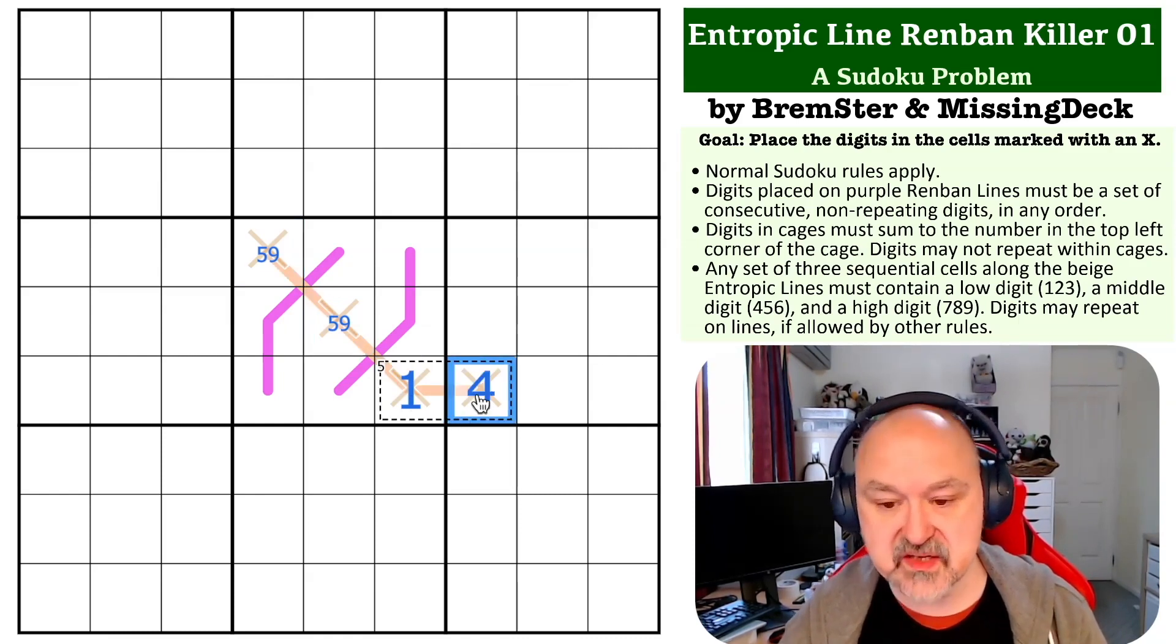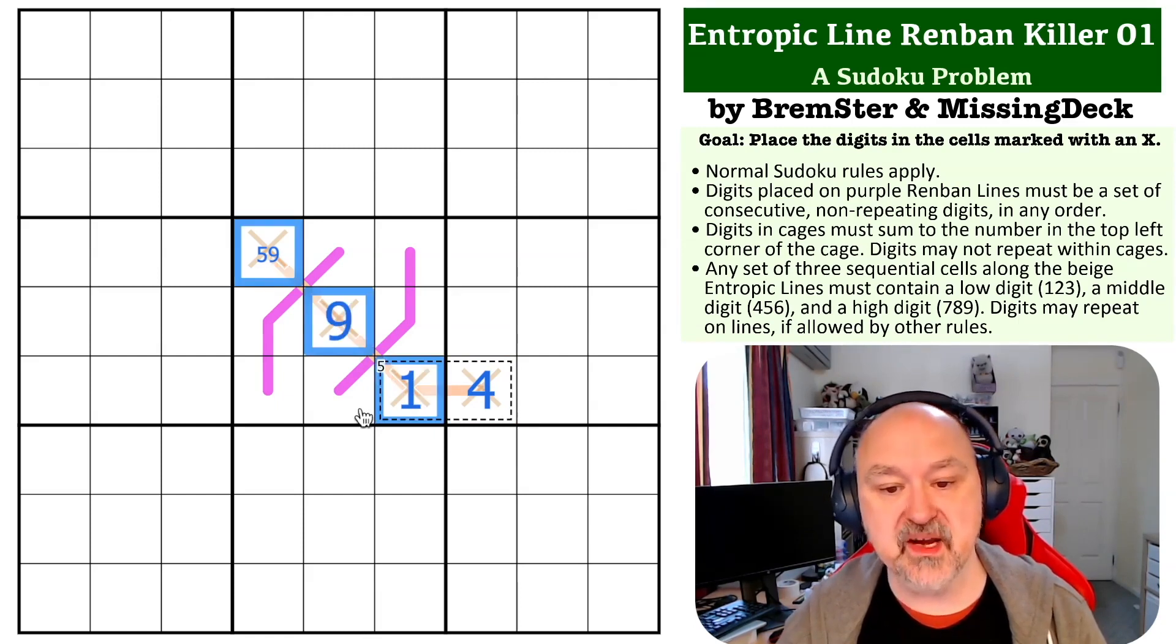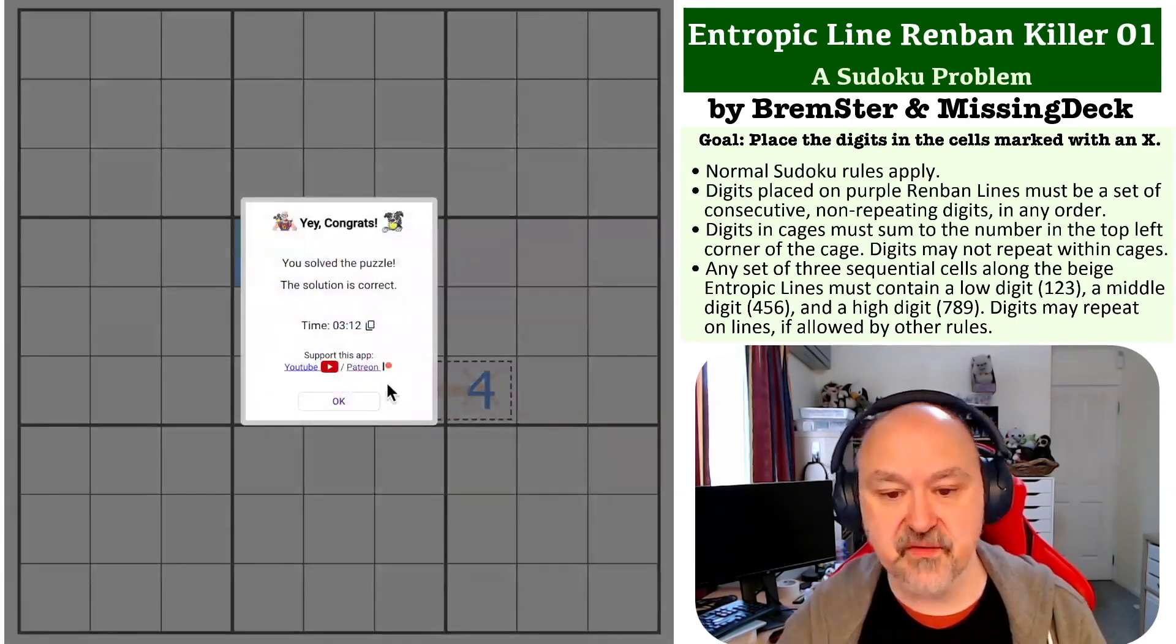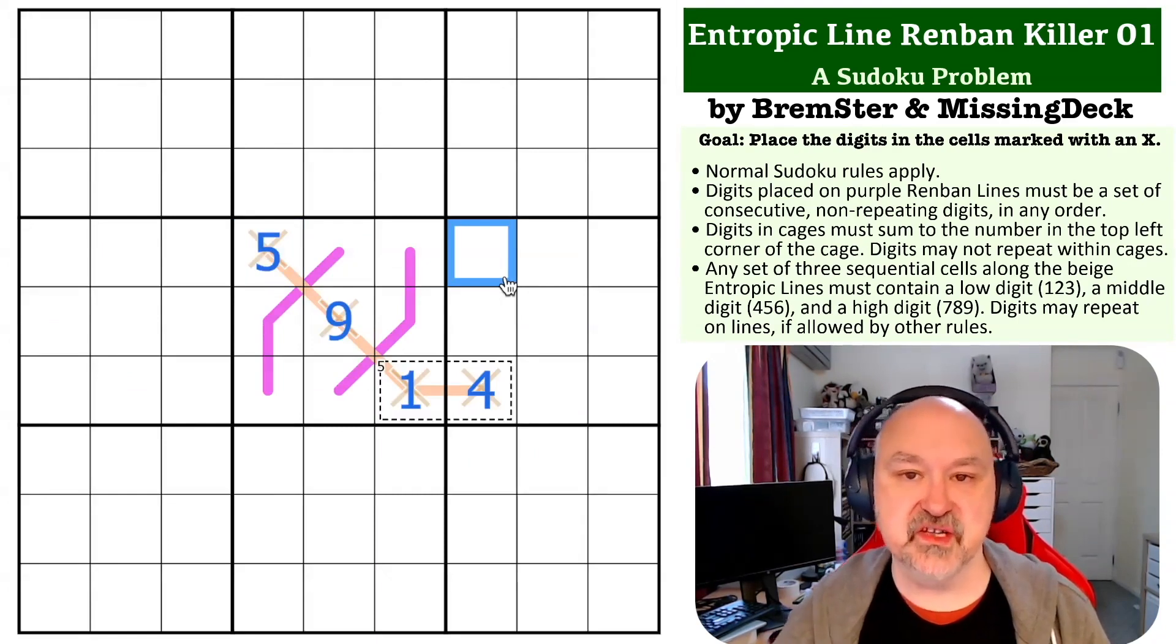And because this is 1 and this is 4, we know because of the entropic layout that this is going to go 1, 4. We need to put a high digit into this run of 3, so this becomes the 9. And then we need to put a medium digit into this run of 3, and this becomes the 5. And that is the solution to this problem.